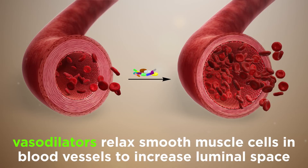Vasodilators are drugs which relax smooth muscle cells that line blood vessels in the arterial and venous system, thereby increasing the luminal space of blood vessels. As we have learned in previous tutorials, this generates a profound reduction of blood pressure.